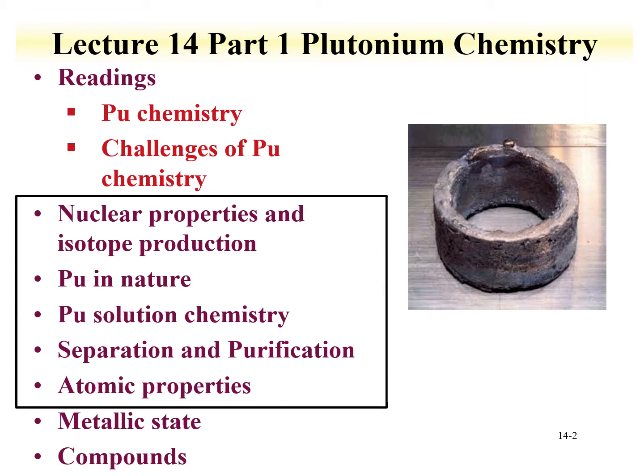Lecture one is going to cover nuclear properties and isotope production for plutonium. We're also going to discuss plutonium in nature — actual natural plutonium in extremely small amounts — describing how one can determine it, where it comes from, and the origin of this plutonium in nature. We'll also talk about plutonium solution chemistry, exploring trends in the actinides where we see the dioxo species again with plutonil, plutonium-5 and plutonium-6. However, plutonium-4 is the dominant oxidation state, so we went from uranium-6, neptunium-5, to plutonium-4.